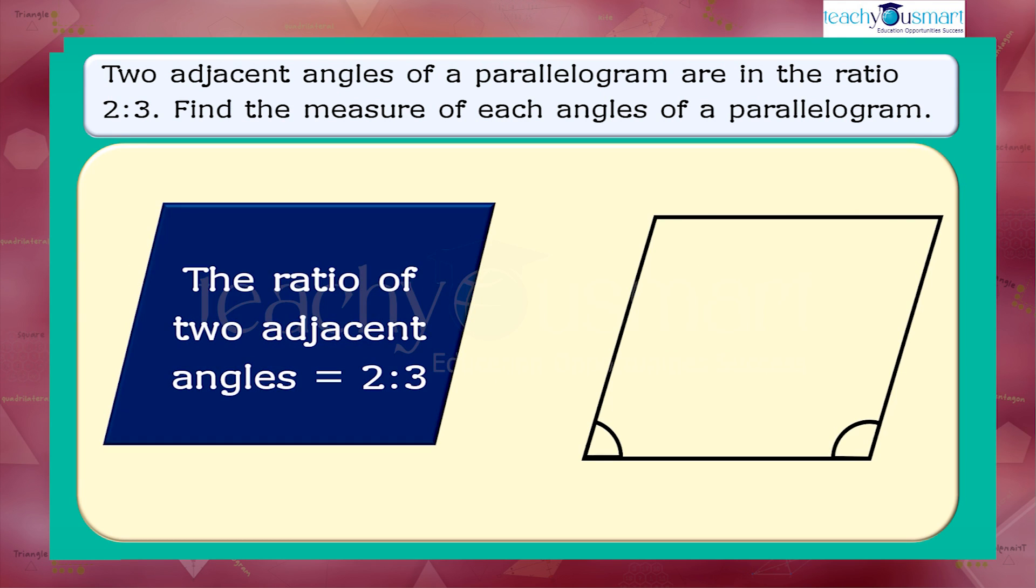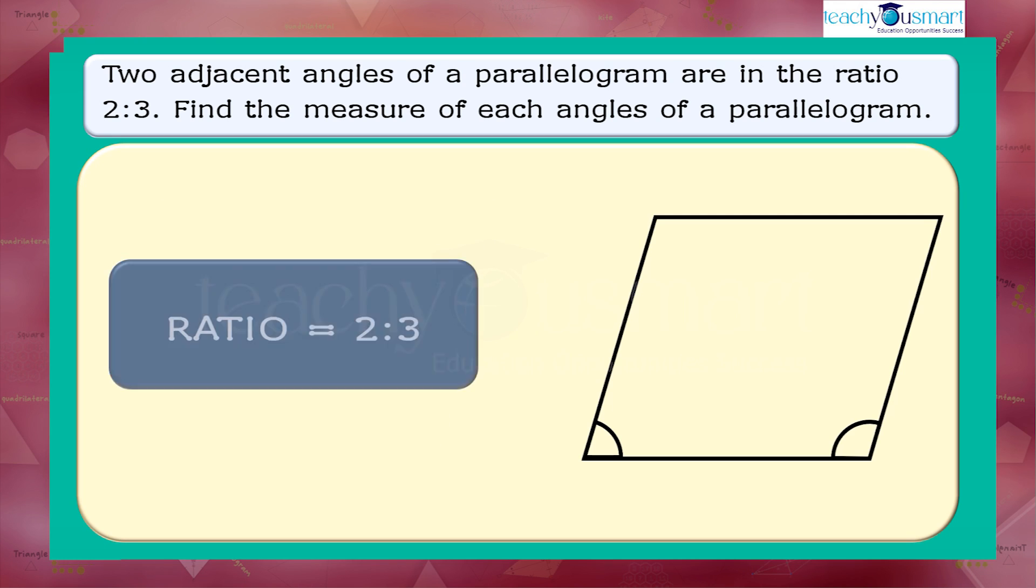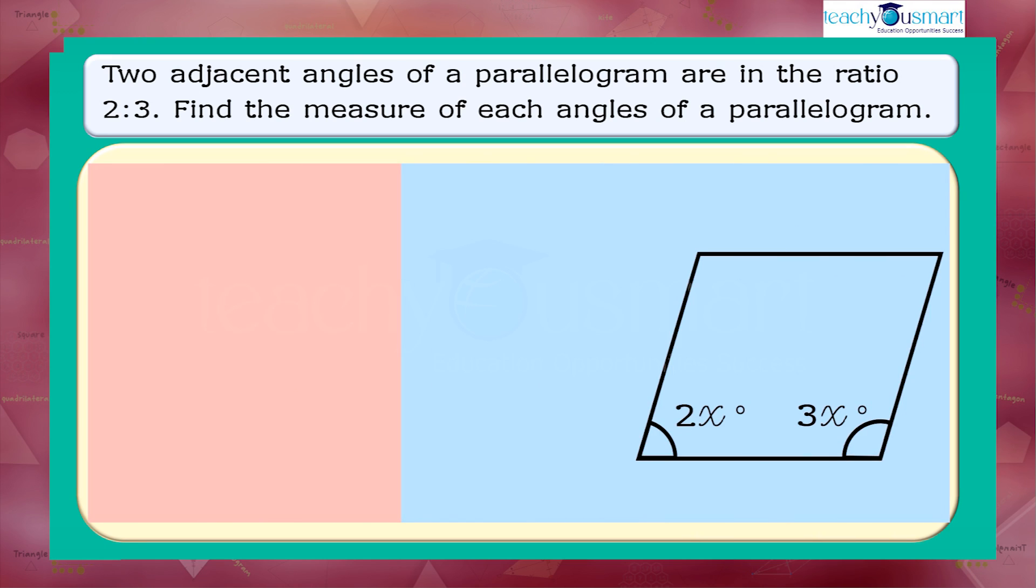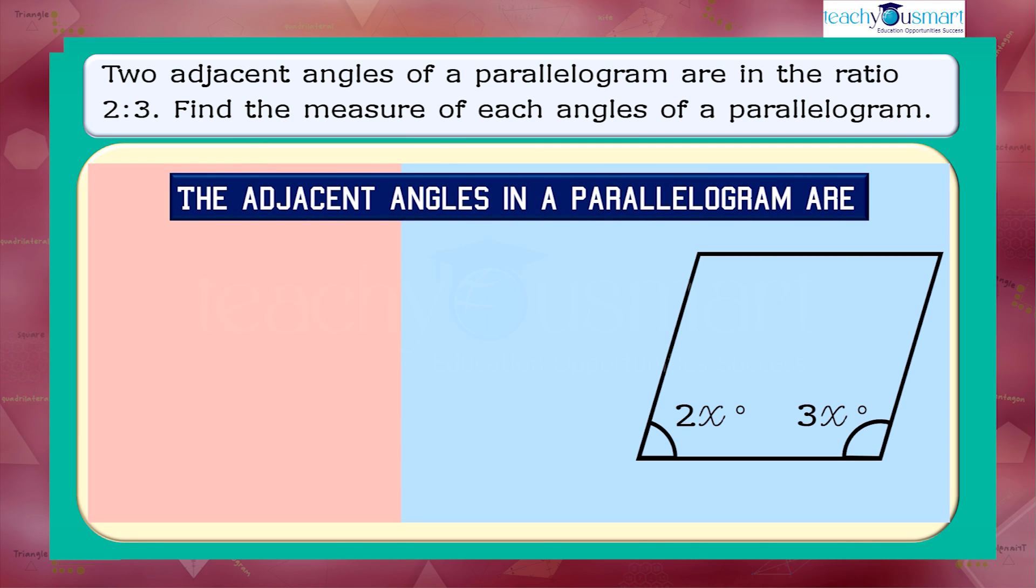Given that the ratio of two adjacent angles of a parallelogram is 2 is to 3, the angles can be taken as 2x degrees and 3x degrees. We have the adjacent angles in a parallelogram are supplementary.